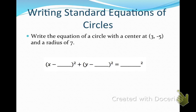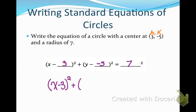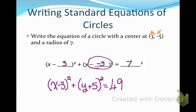Write the equation of a circle with a center at (3, negative 5) and a radius of 7. Here h is 3, k is negative 5, and the radius is 7. Plugging in and simplifying: x minus 3 squared plus — since y minus negative 5 simplifies to y plus 5 — the quantity y plus 5 squared. When you see y plus 5, the y value of the center is negative. And 7 squared is 49, so the equation equals 49.